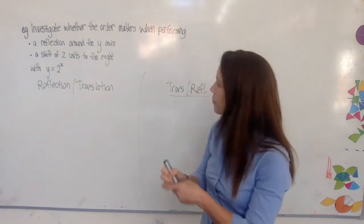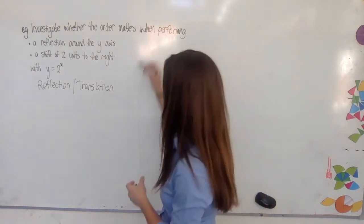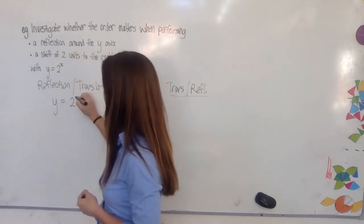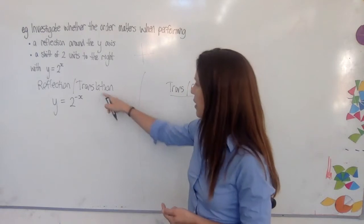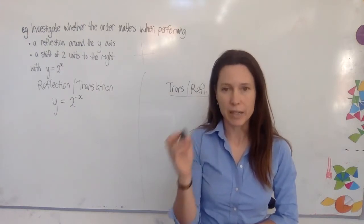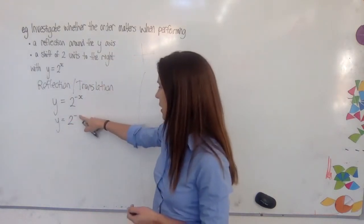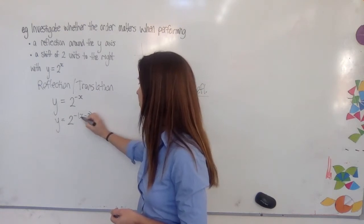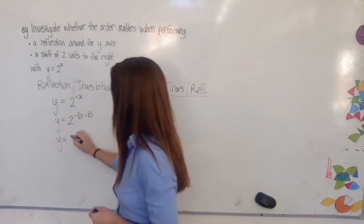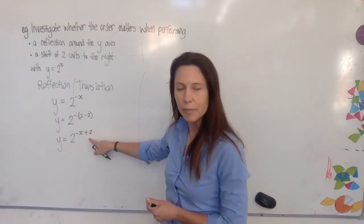If we do the reflection first, we replace x with negative x, since reflecting around the y-axis swaps things on one side with the other. So we rewrite our formula with x replaced by minus x. Then to translate two units to the right, we replace x with x minus 2, because that's what moves it two units to the right. So we rewrite again, substituting x minus 2 in brackets. The same function can then be expanded from those brackets.